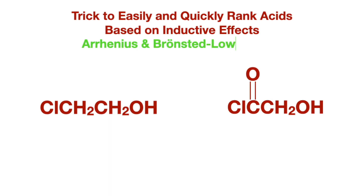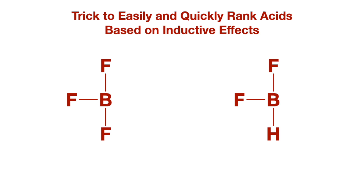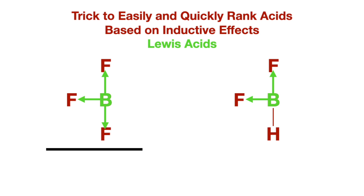A trick to help rank proton-donating acids is to first identify the acid in each compound, which is the hydrogen, and then draw arrows toward any and all electron-withdrawing groups, which are atoms more electronegative than the carbons or other atoms in the compound. The compound with more arrows pointing away from the acidic hydrogen will be the stronger acid. You can use the same trick for ranking lone pair-accepting acids: identify the lone pair-accepting atom, which is boron in this case, draw arrows toward electron-withdrawing groups, and the compound with the most arrows pointing away from that atom will be the stronger acid.